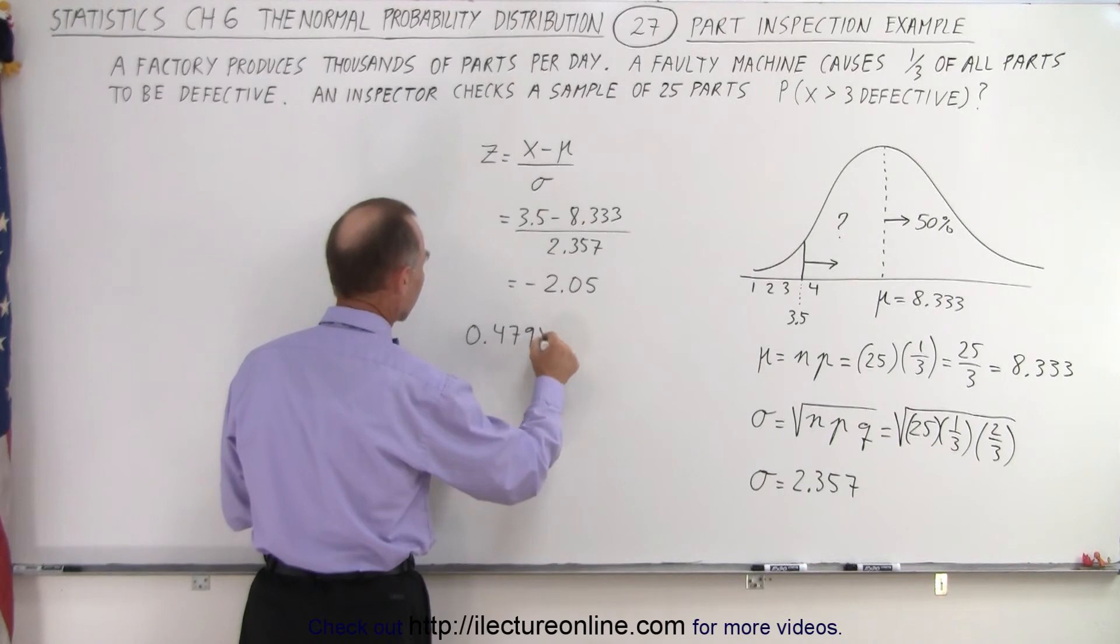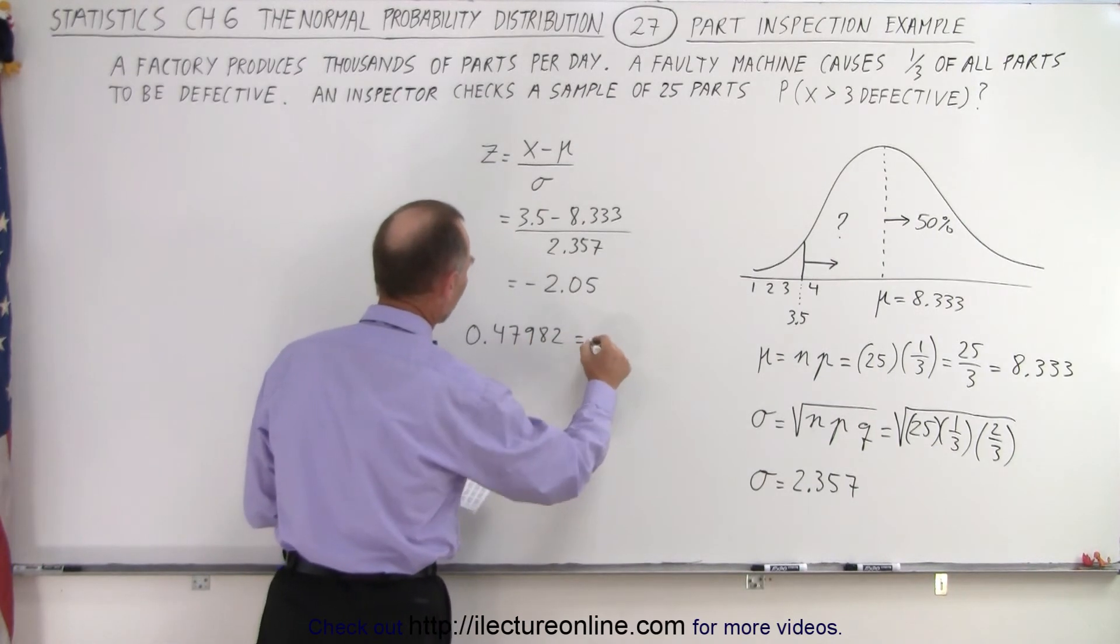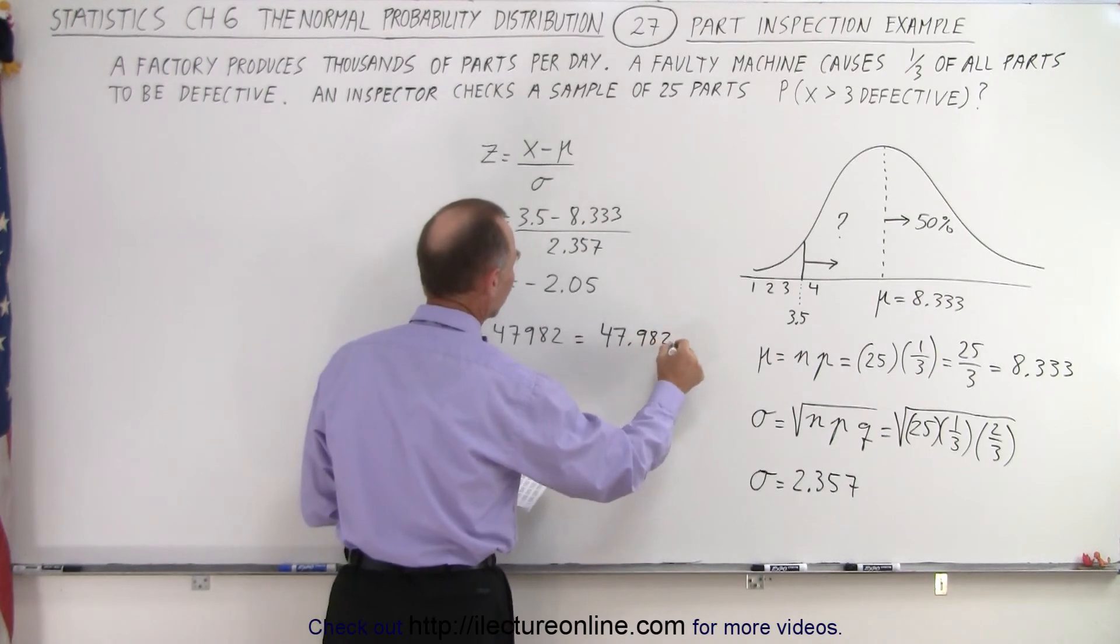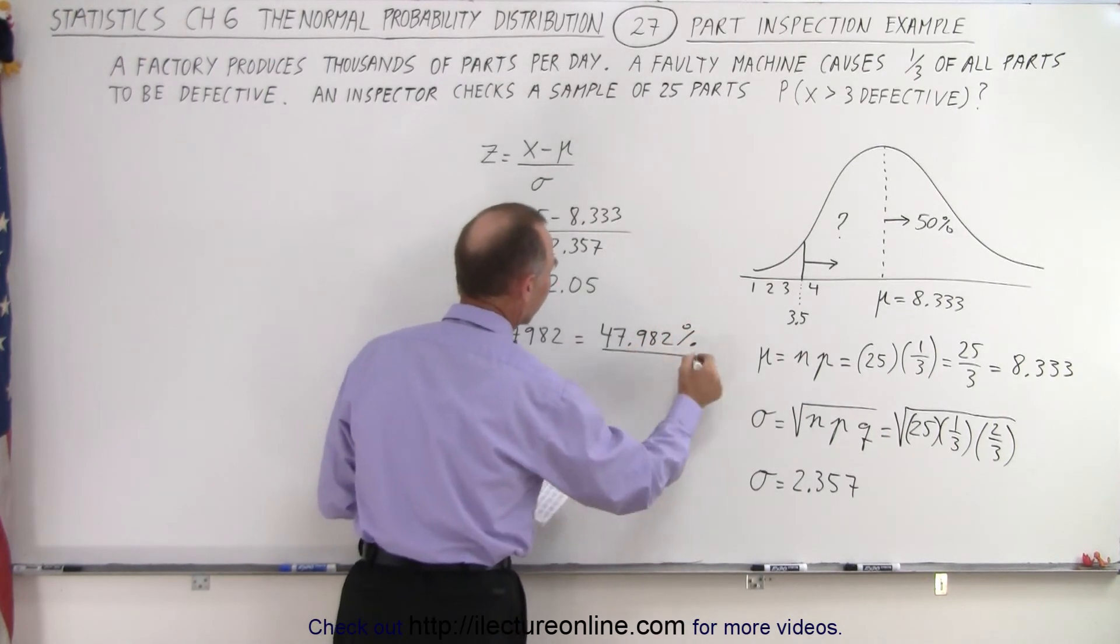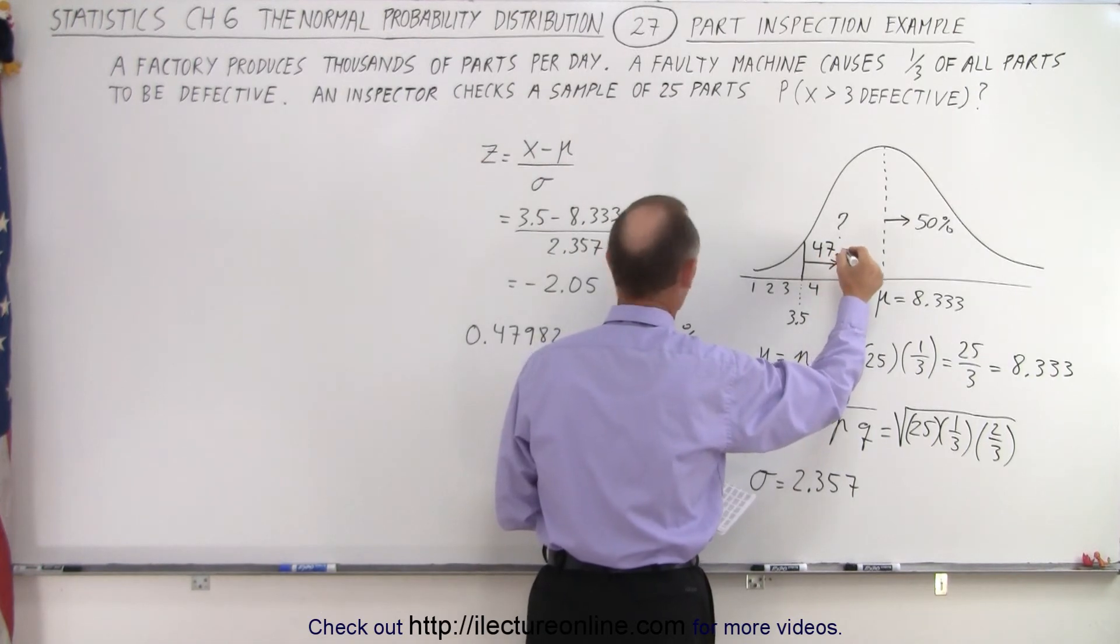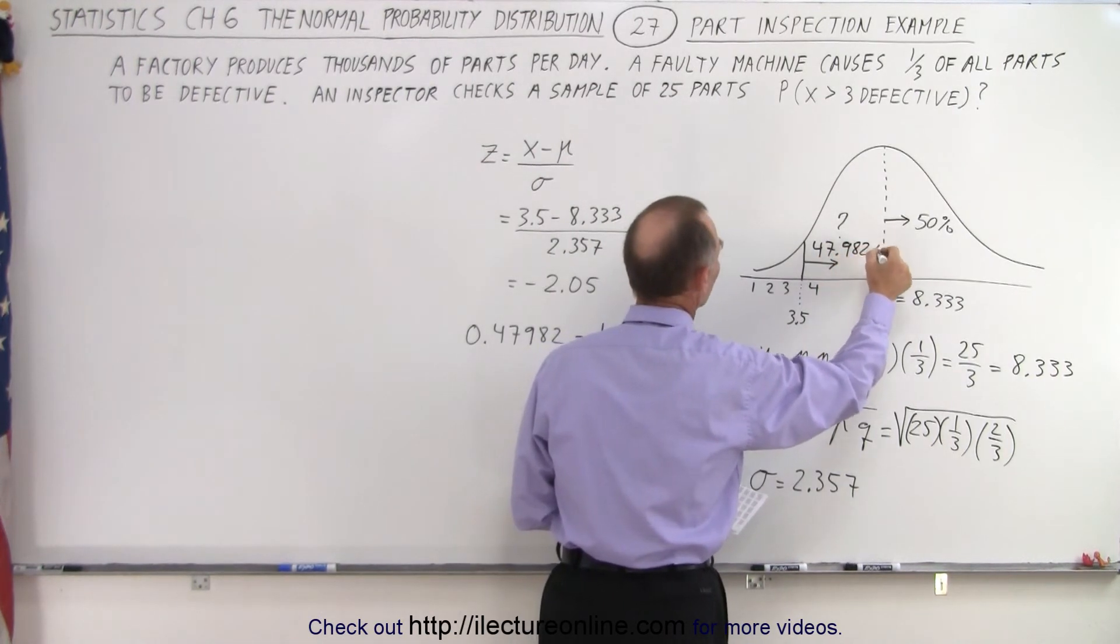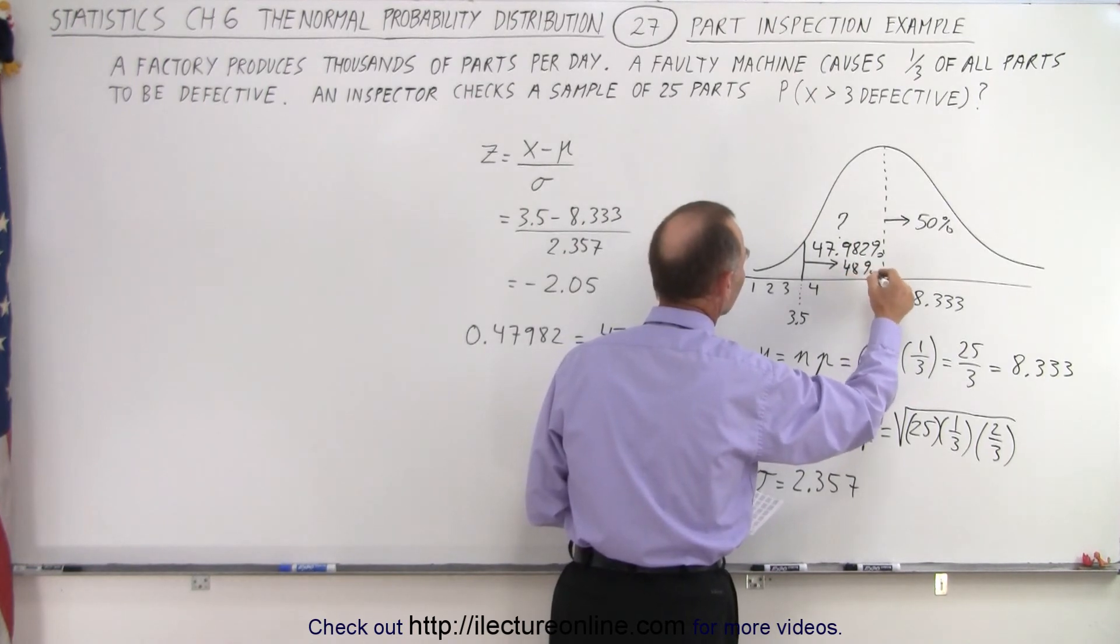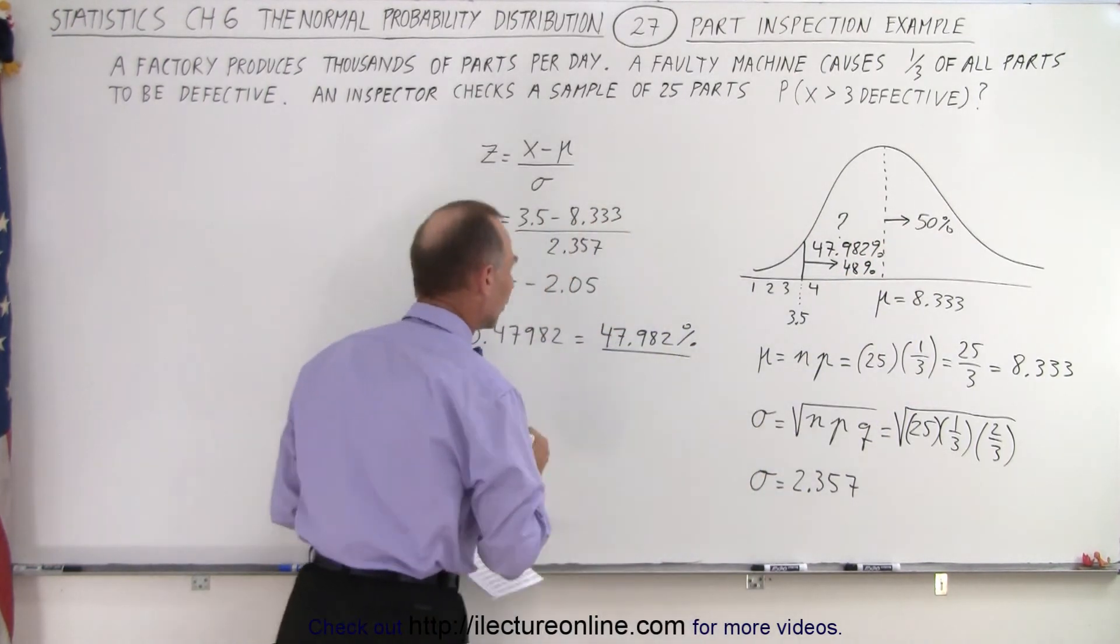That's 47.982%, or essentially that's 47.982%. That's what we find in the table, which is the region right here. That's 47.982%. Essentially, we're talking about 48% on this side, 50% on that side.